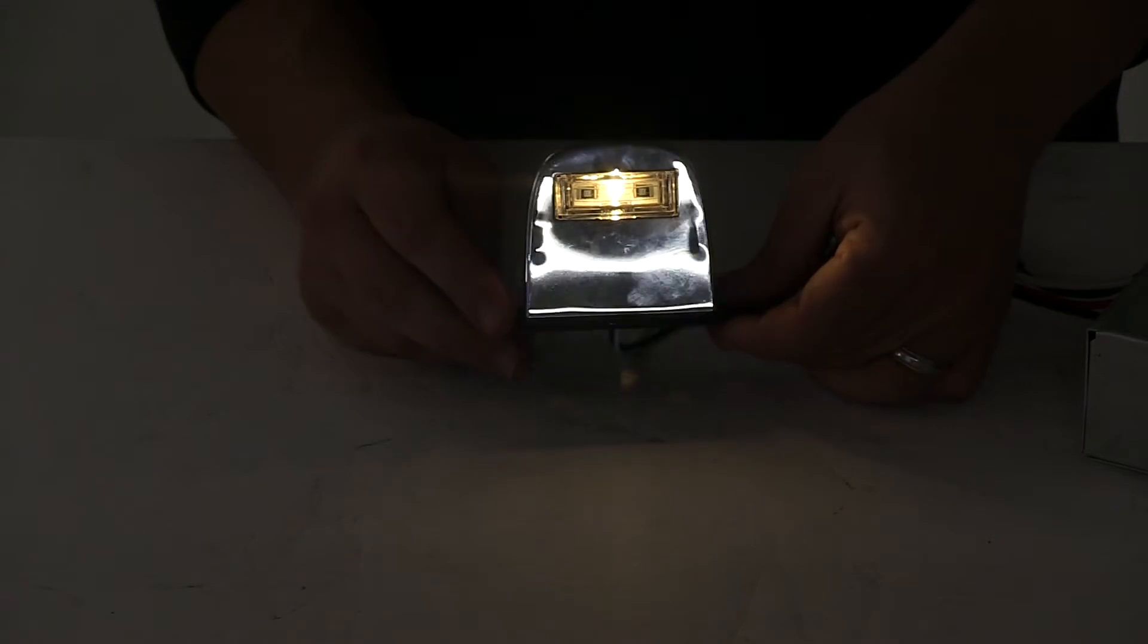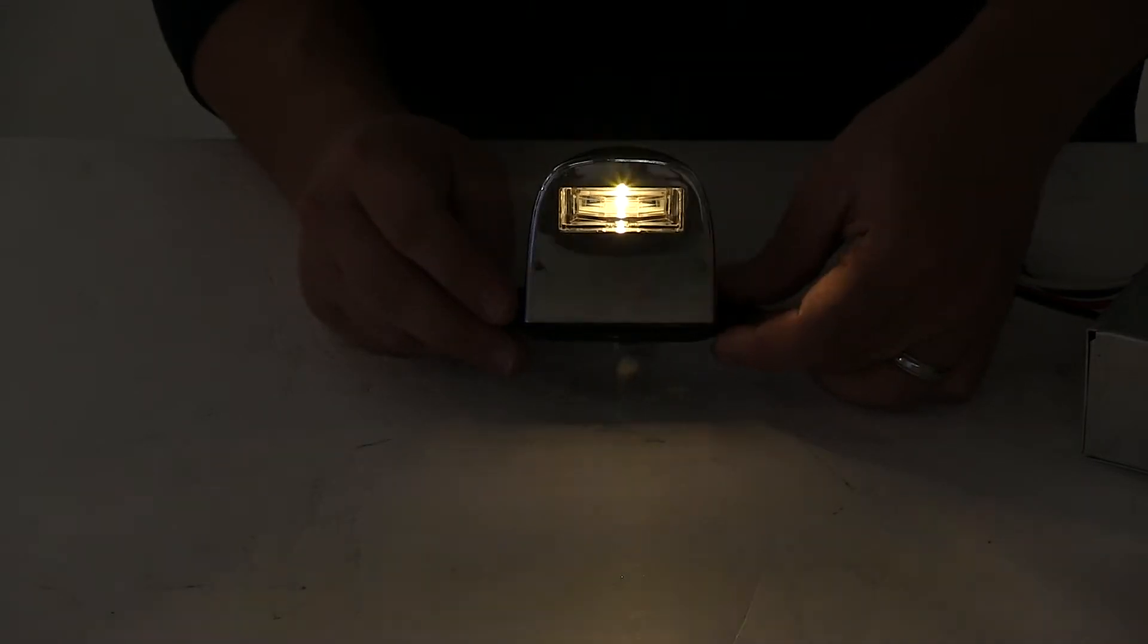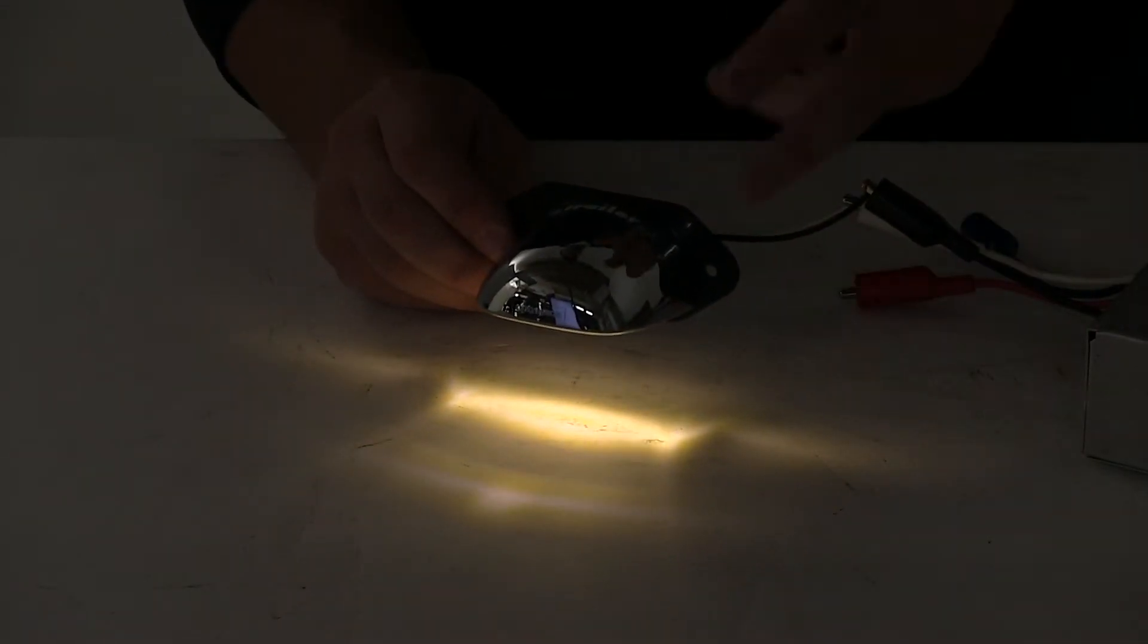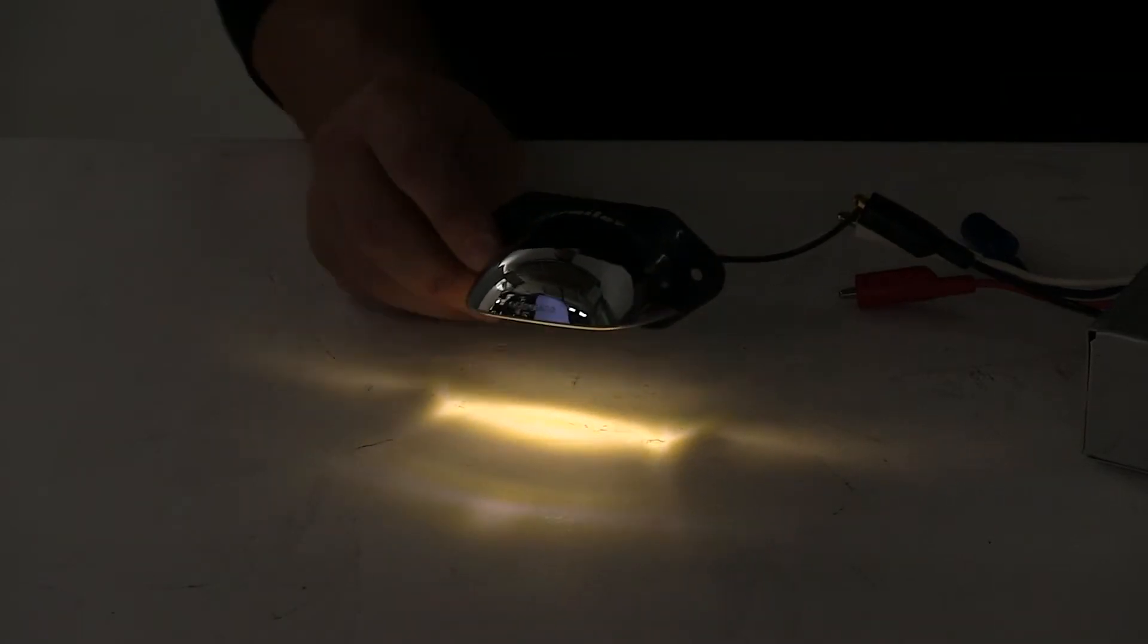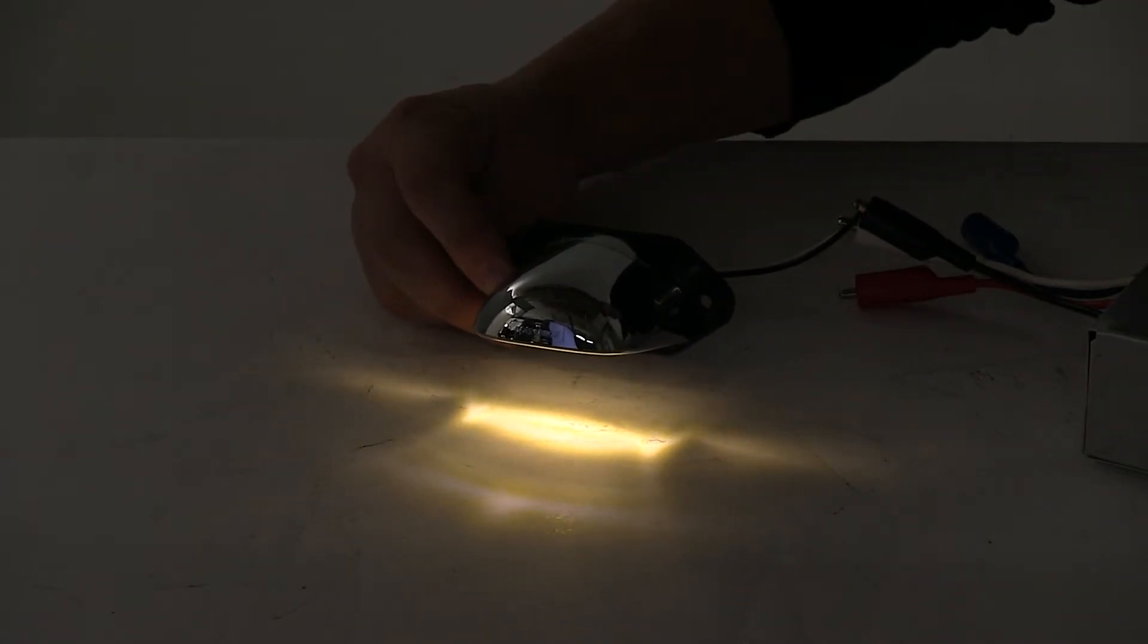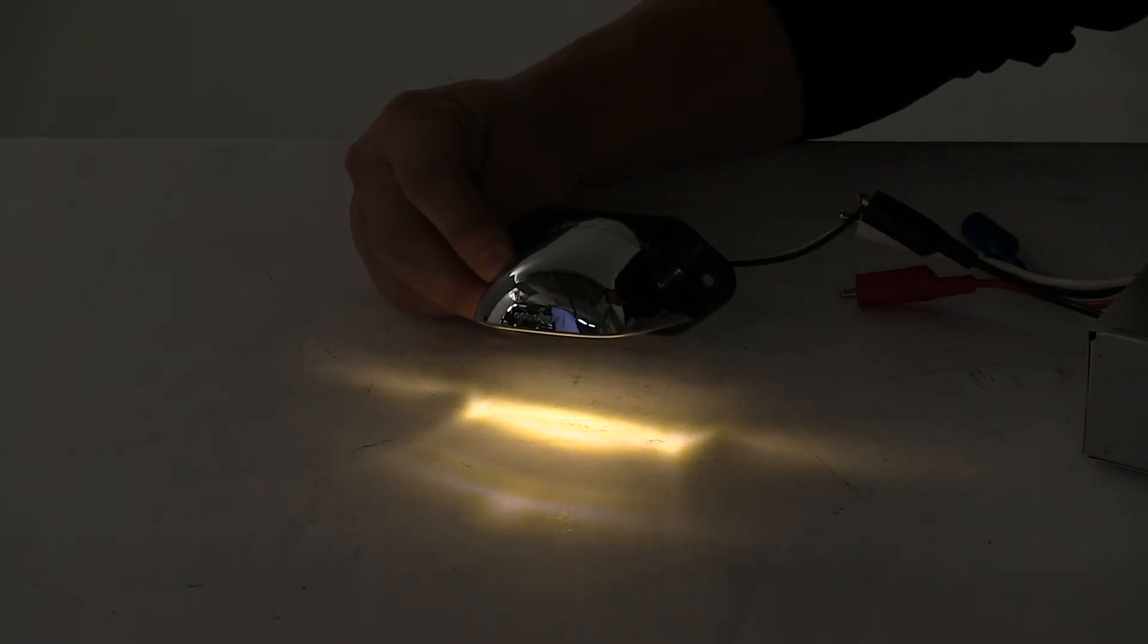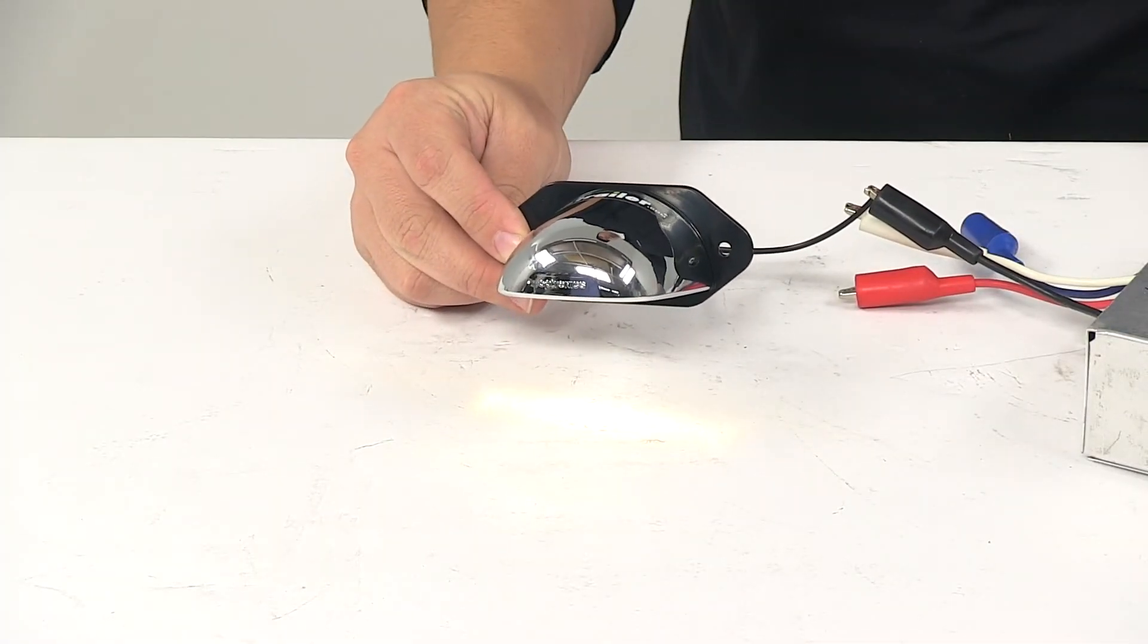It's a single diode design or a single LED design, but it still provides plenty of light output to illuminate a license plate on the trailer. Power draw at 12.8 volts is 0.054 amps and Optronix puts a lifetime warranty on the LEDs.